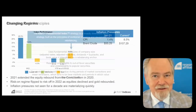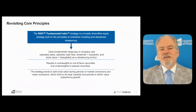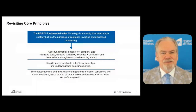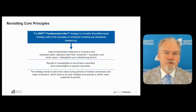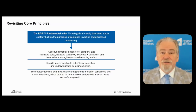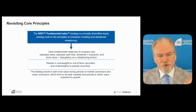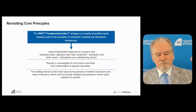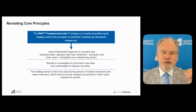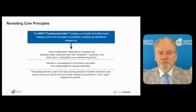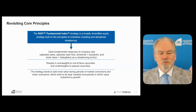Thank you, Quai. A revisiting of core principles is awfully helpful, because RAFI is a lot more nuanced than simply weighting companies according to how big they are, although that's the fundamental concept. With market cap weighting, the more expensive a company is, the more weight it gets in your portfolio. If you have a bigger allocation to a particular company than another, tacitly that must mean you like it better — you want to own more of it.